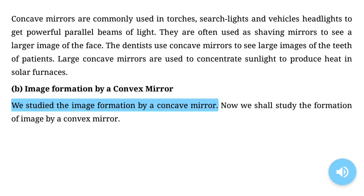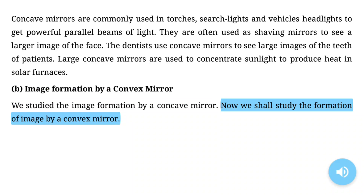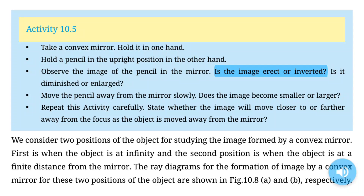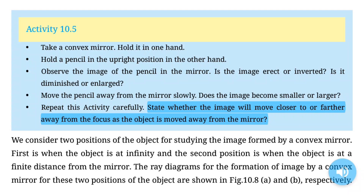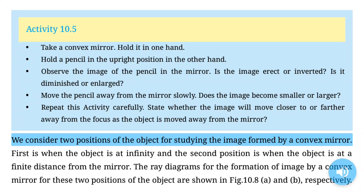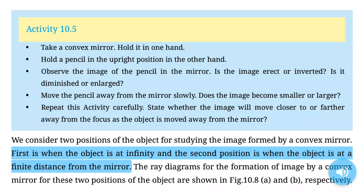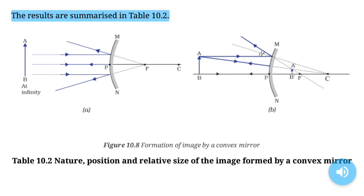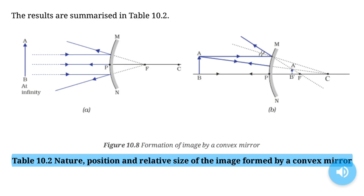Image formation by a convex mirror. We studied the image formation by a concave mirror. Now we shall study the formation of image by a convex mirror. Activity 10.5: Take a convex mirror. Hold it in one hand. Hold a pencil in the upright position in the other hand. Observe the image of the pencil in the mirror. Is the image erect or inverted? Is it diminished or enlarged? Move the pencil away from the mirror slowly. Does the image become smaller or larger? State whether the image will move closer to or further away from the focus as the object is moved away from the mirror.